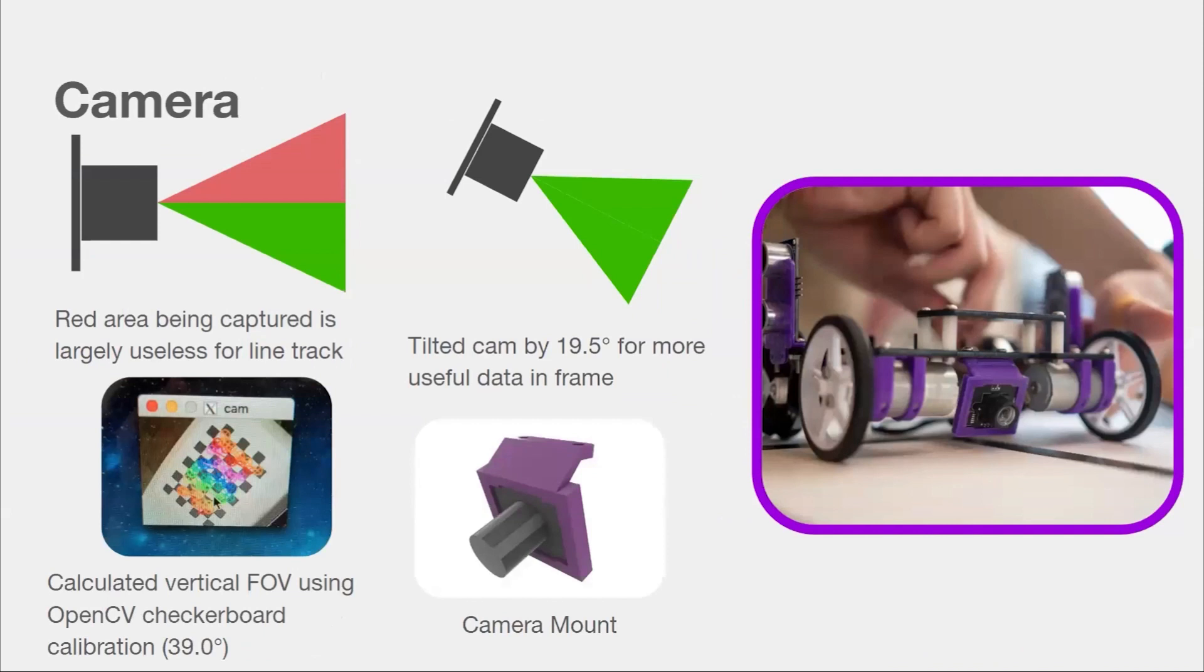For the camera, placement was very important. If we pointed it straight forward, half of the frame will be useless for the task, as it is seeing upwards. And the part of the line the robot sees will be very far in front of the wheels, which is bad. So if the robot has to navigate a very tight turn, it may lose vision of the line while turning. Hence, we calculated the vertical field of view of the camera and tilted it downwards by half the field of view, so it can still see to infinity but retains more useful information in the frame and sees the part of the line closer to the robot.